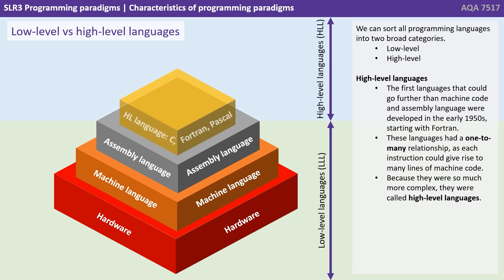The first languages that could go further than machine code and assembly language were developed in the early 1950s, starting with Fortran. These languages all had a one to many relationship, as each instruction could give rise to many lines of machine code. Because they were so much more complex, they were called high level languages.